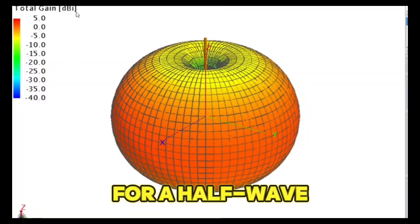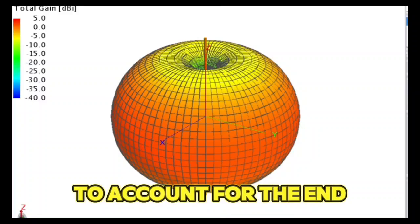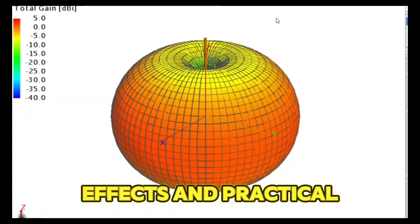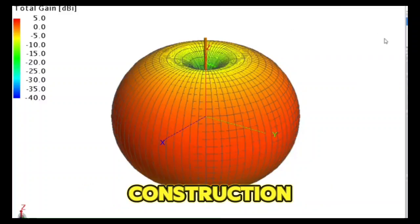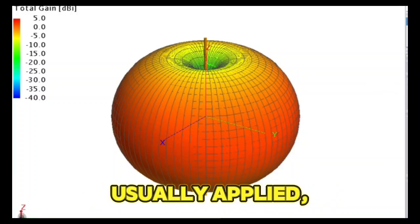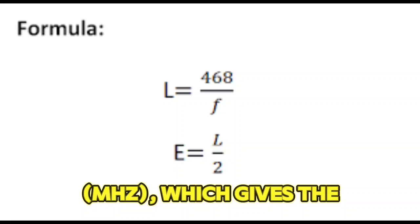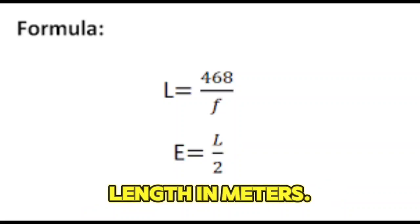For a half-wave dipole, the total length L of the antenna is L equals lambda/2. To account for end effects and practical construction considerations, a correction factor is usually applied, making the practical formula L equals 143/f(megahertz), which gives the length in meters.